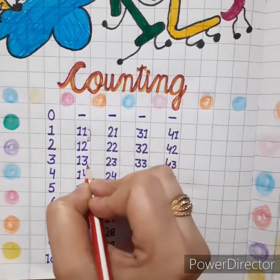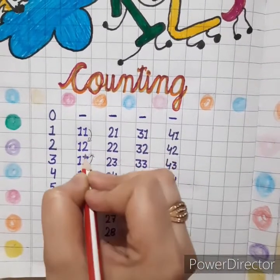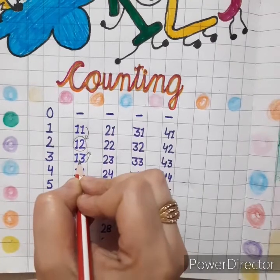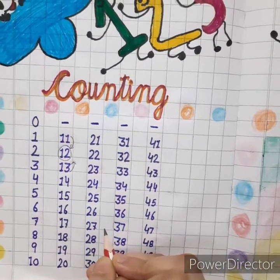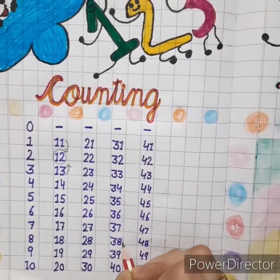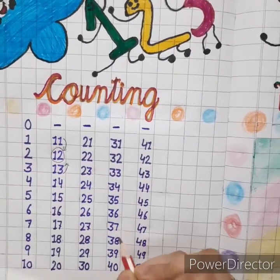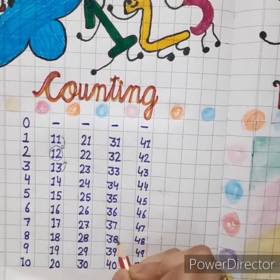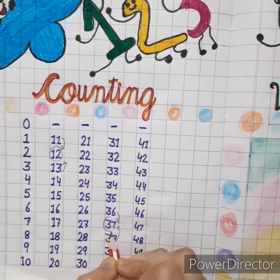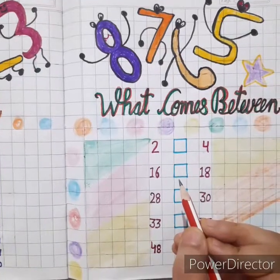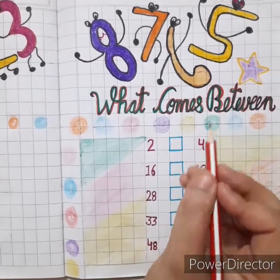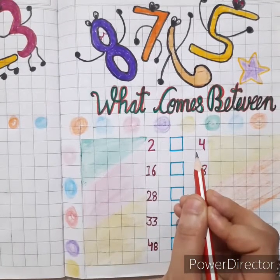In 11 and 13, the middle number is 12. Okay kids, now one more example to understand it better — which number comes between 36 and 38? To bachon, 36 aur 38 ke beech mein kaun sa number aa raha hai? That is 37.